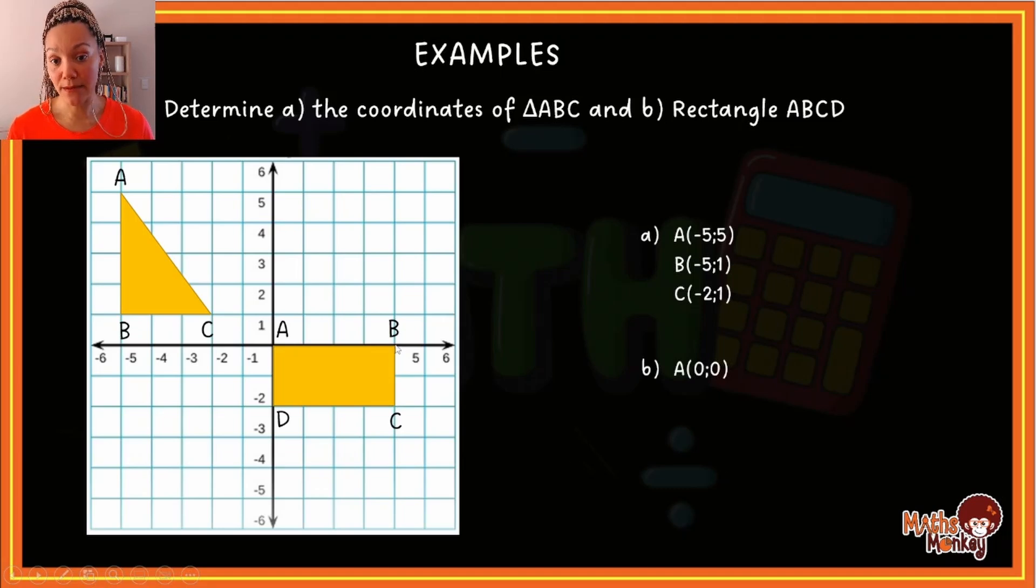Right. Then if I look at B, B is on the x-axis. And B's coordinate is then 1, 2, 3, 4. So B's x-coordinate is 4. But then if I go to the y-axis it's 0. So B's coordinate is then (4, 0). Hopefully by now you're getting into the swing of things.